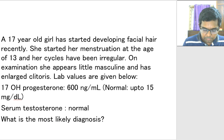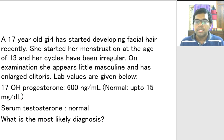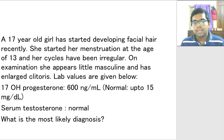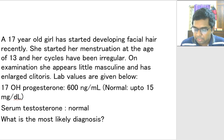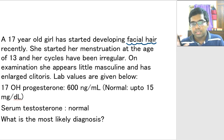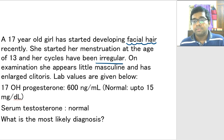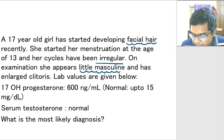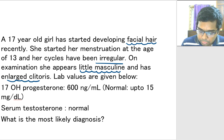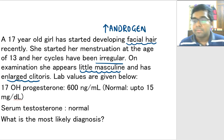The next question: a 17-year-old girl has started developing facial hair recently. She started menstruation at age 13 years and her cycles have been irregular. On examination, she appears slightly masculine and has an enlarged clitoris. Lab values are given. She has facial hair which is not normal — in girls you do not expect facial hair. Menstrual cycles are irregular. She appears masculine with enlarged clitoris. All these are due to increased levels of androgen in her body — what we call a mild form of virilization.